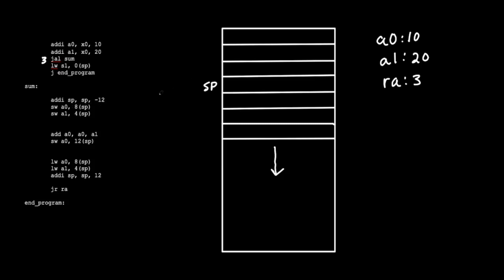The instruction after we decremented our stack pointer is to store the value of A0 into stack pointer with an offset of 8, so that's plus 4, plus 8 — here we store A0, which is 10. The next instruction asks us to do the same thing for register A1, storing at stack pointer with an offset of 4. And now we're going to set A0 equal to A0 plus A1, so that's 10 plus 20. So now A0 is equal to 30.